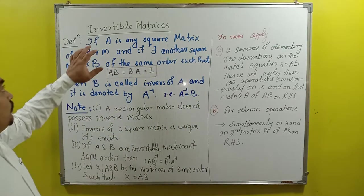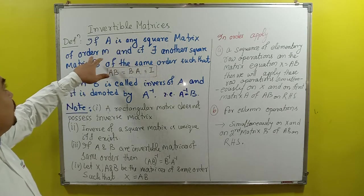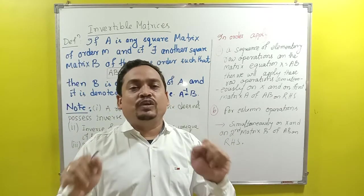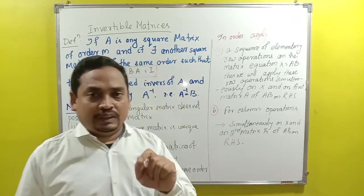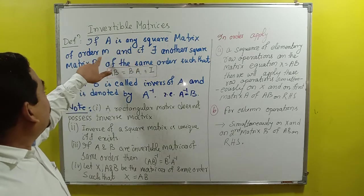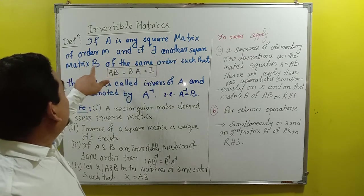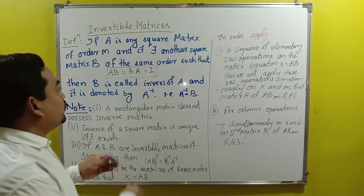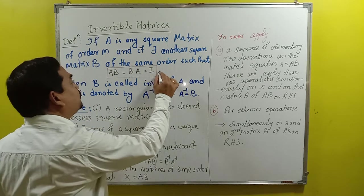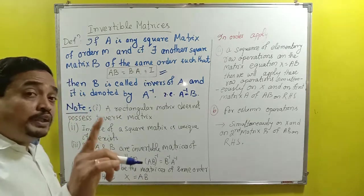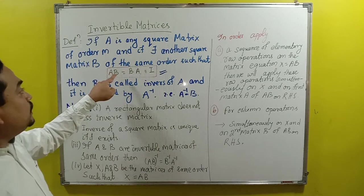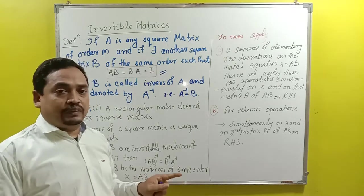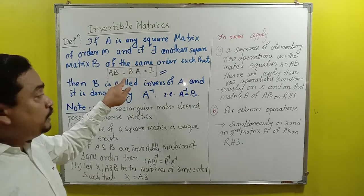For any square matrix A of order m, if there exists another square matrix B of the same order such that A·B = B·A = I — this is very important. Only A·B = I is not enough; it must satisfy both A·B = B·A = I. Rectangular matrices do not have inverses — it must be a square matrix.